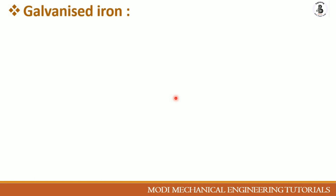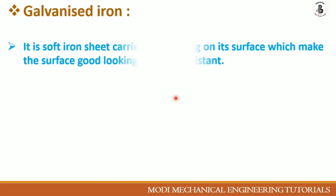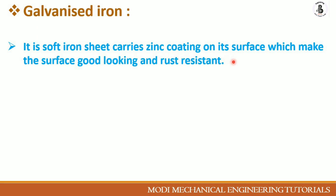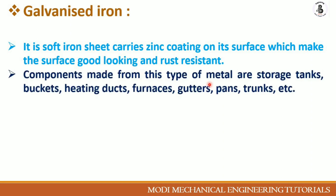The next material is galvanized iron. Galvanized iron is a soft iron sheet that carries a zinc coating on its surface. This coating makes the surface good-looking as well as rust-resistant, which is one of the advantages of this surface engineering process. It increases the life of the sheet metal and also provides corrosion resistance. Components made from galvanized iron include storage tanks, buckets, heating ducts, furnaces, guitar pans, trunks, and many more.